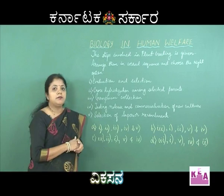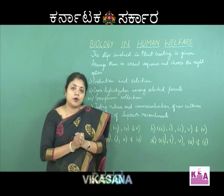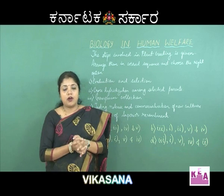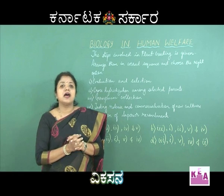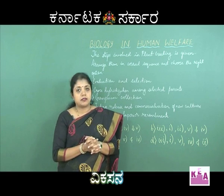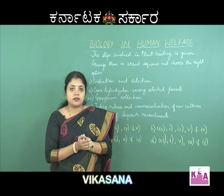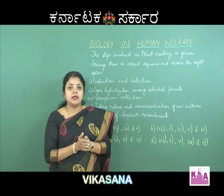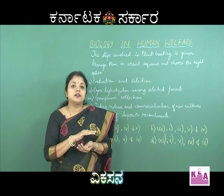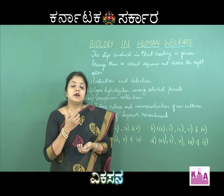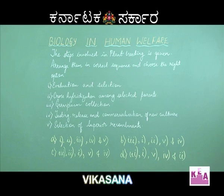In plant breeding, this is a technique to obtain a new variety of plant or a hybrid. The first step is to have a collection of the germplasm. Germplasm collection literally means selecting all the diverse alleles of all the genes for that particular crop, so the scientist will have to select all possible varieties available for that particular plant.